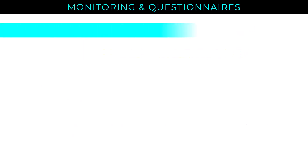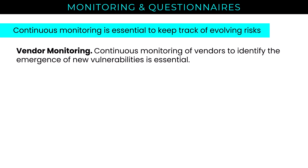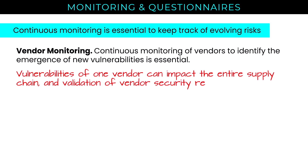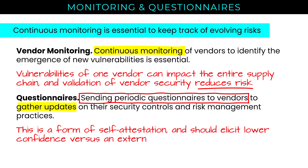Continuous monitoring is essential to track evolving risks with vendors. Vendor monitoring means continuously identifying the emergence of new vulnerabilities, remembering that vulnerabilities of one vendor can impact the entire supply chain. Monitoring vendors is a continuous process that reduces risk. Periodic questionnaires sent to vendors gather updates on their security controls and risk management practices — a form of self-attestation that should elicit lower confidence than an external vendor assessment, but provides a way to check in since the last discussion of security controls.